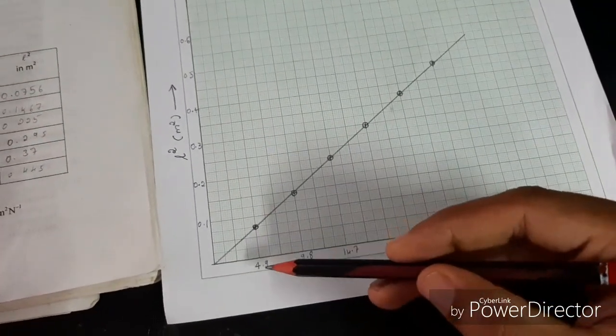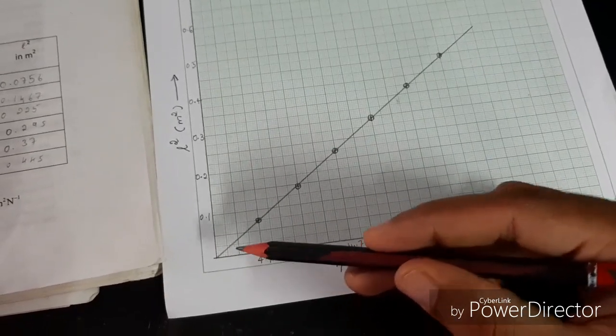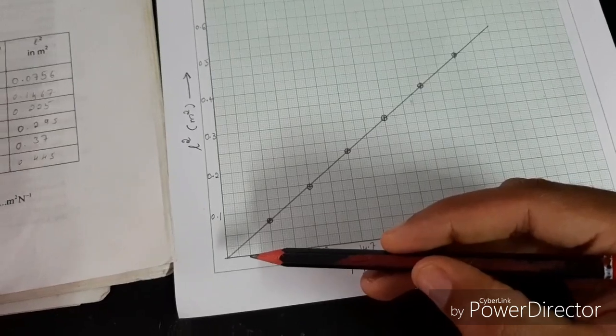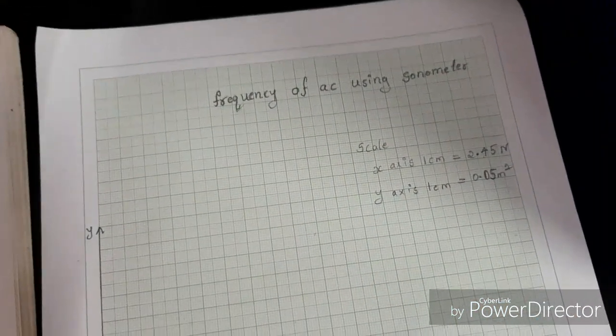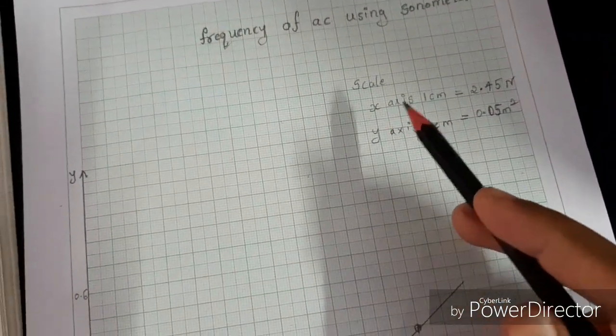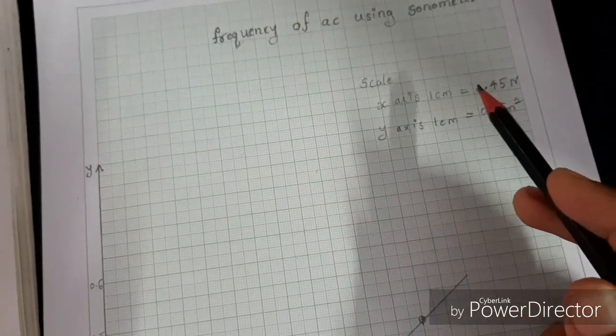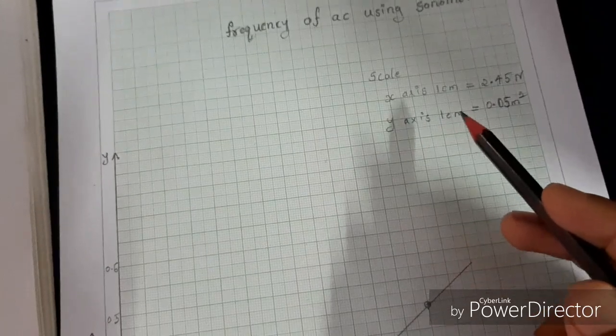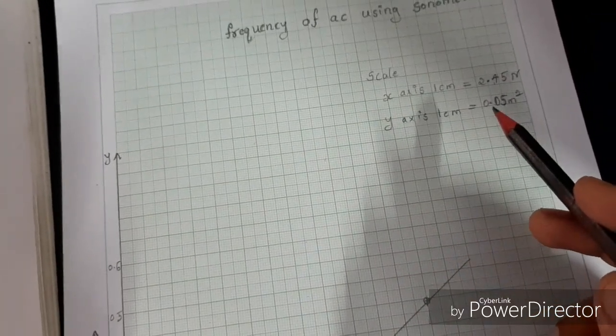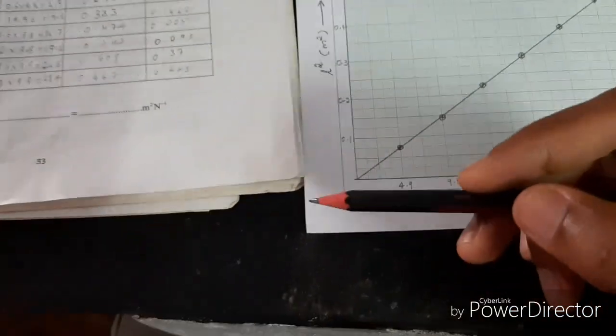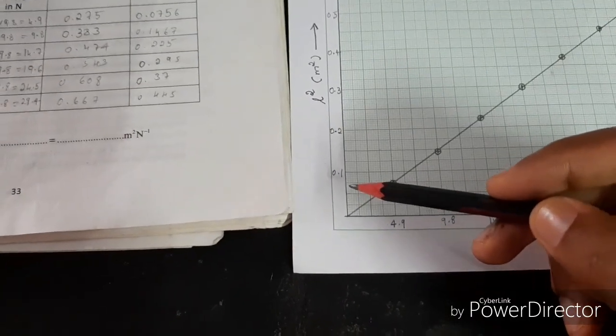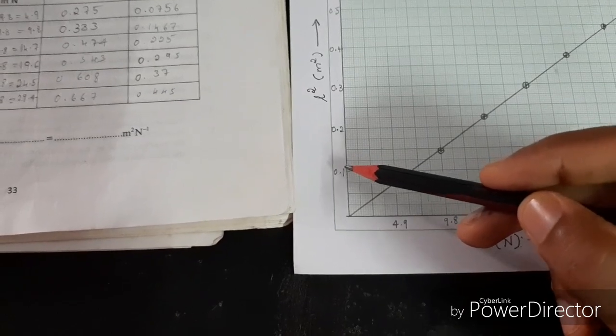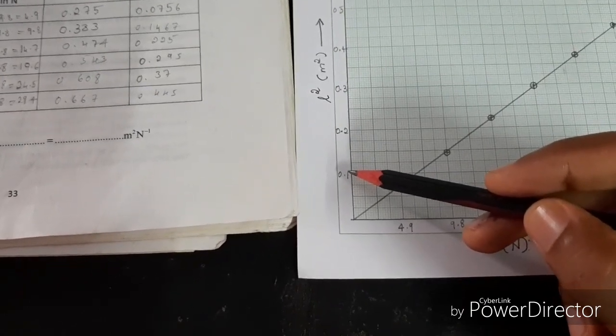For 1 centimeter, that is 4.9 divided by 2, that is 2.45, so I wrote x-axis 1 centimeter equals to 2.45 newton. And also y-axis, 1 centimeter equals to 0.05 meter square. So 2 centimeter equals to 0.1 meter square.